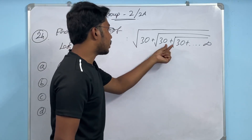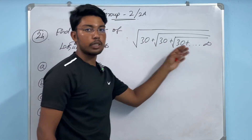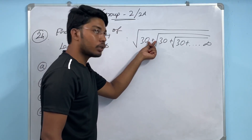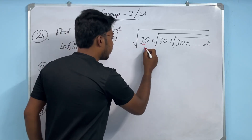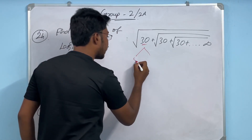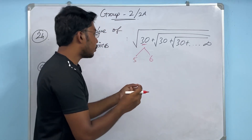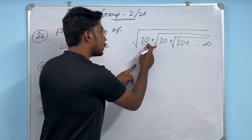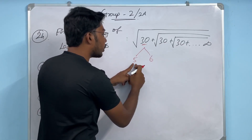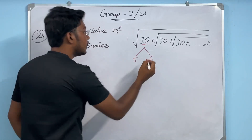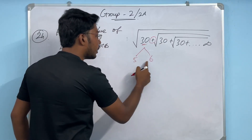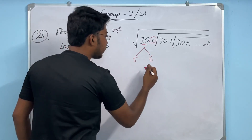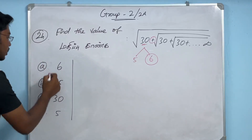Next question involves a nested radical with plus and infinity pattern. The key point: if you have a repeating nested expression, you can let it equal x, giving x² = some number. Looking at the pattern, the number of 2 is equal to 6 — multiply: 2 × 3 = 6. So the answer is 6.